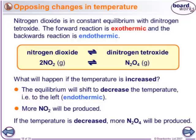Are you going to drive it in the exothermic direction or the endothermic direction? The equilibrium will shift to decrease the temperature — it's trying to oppose the change — so it will go in the endothermic direction, which is to the left. That's the nitrogen dioxide side, so more nitrogen dioxide will be produced. If the temperature is decreased, then more dinitrogen tetroxide will be produced, because the reaction shifts in the exothermic direction to produce more energy and warm it up again.